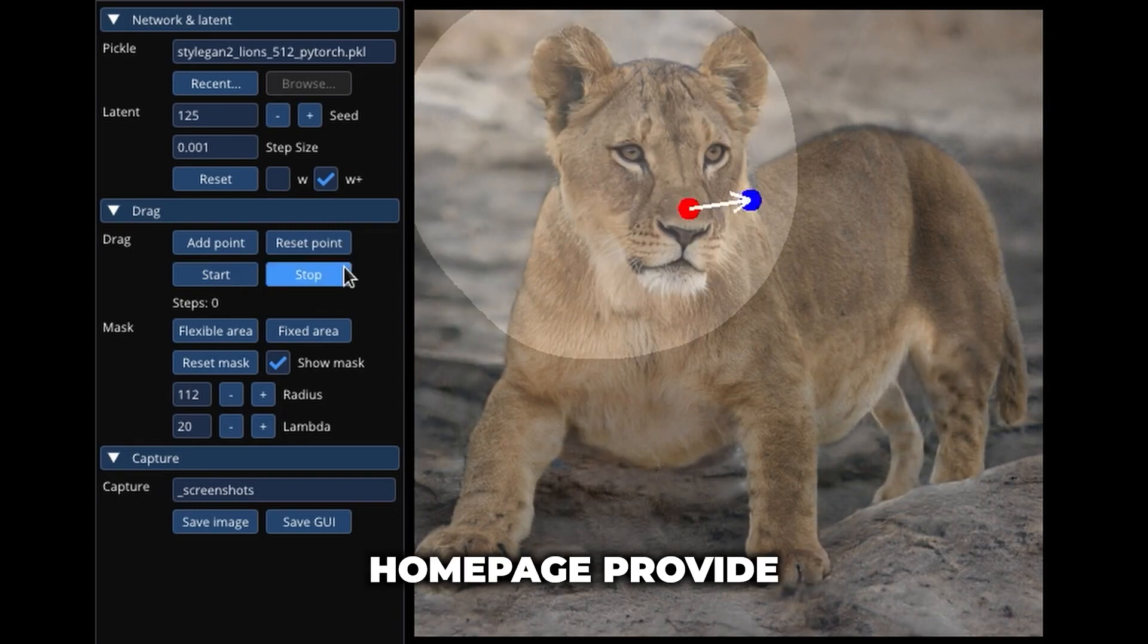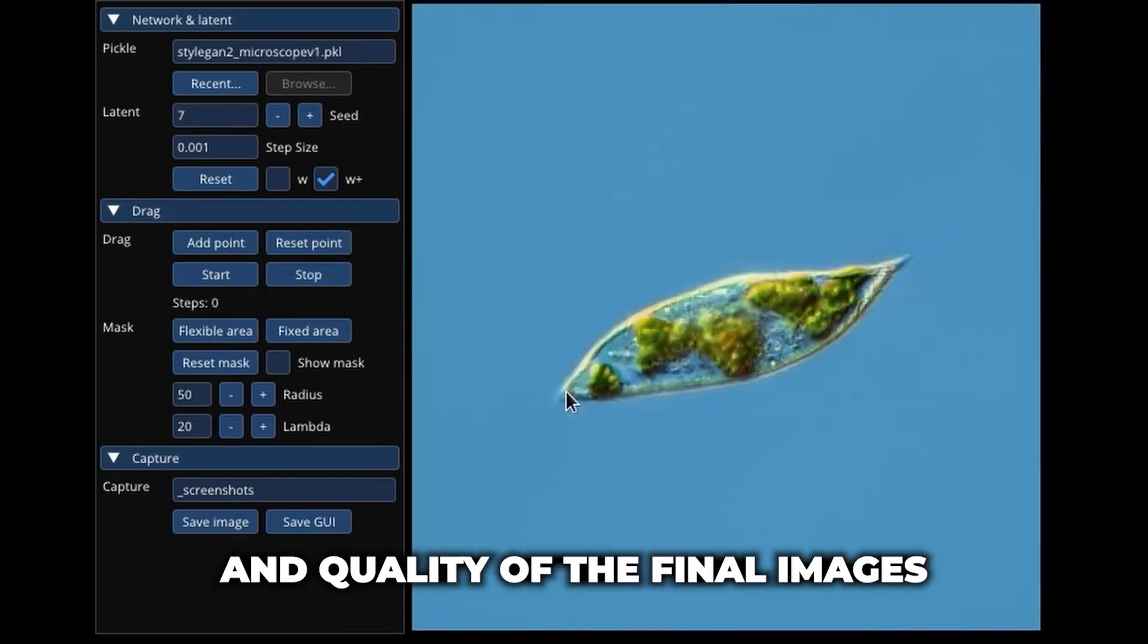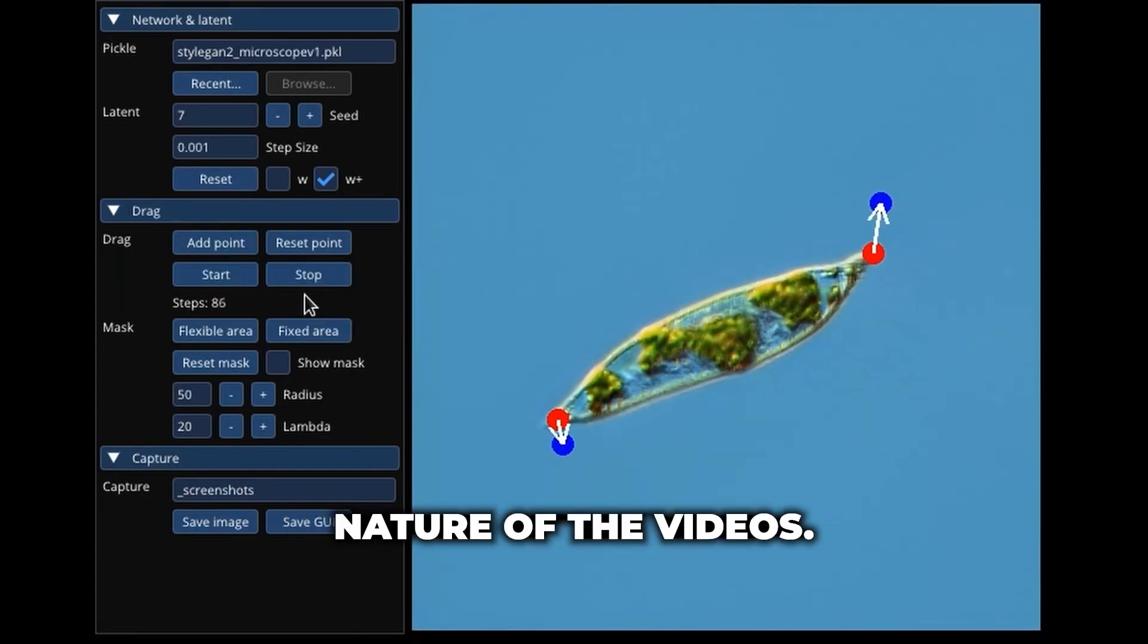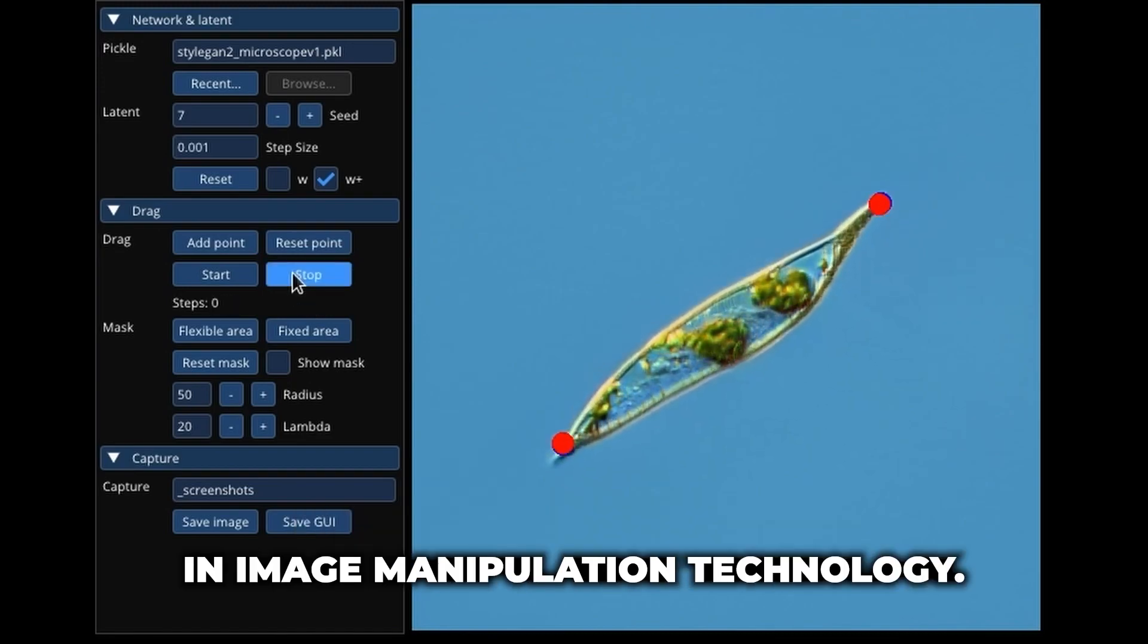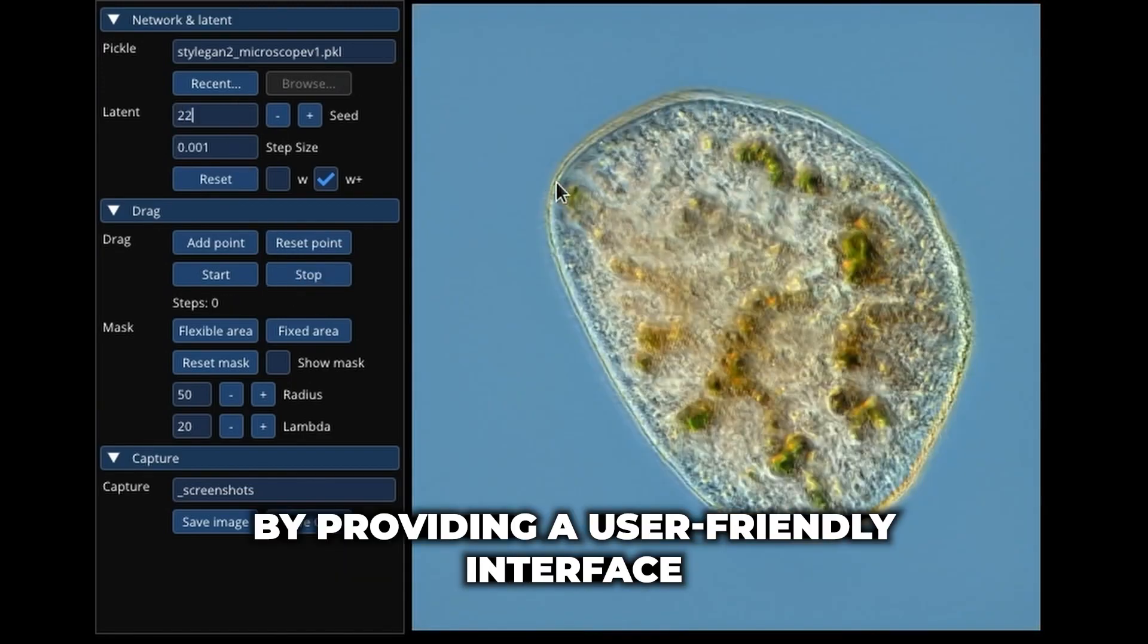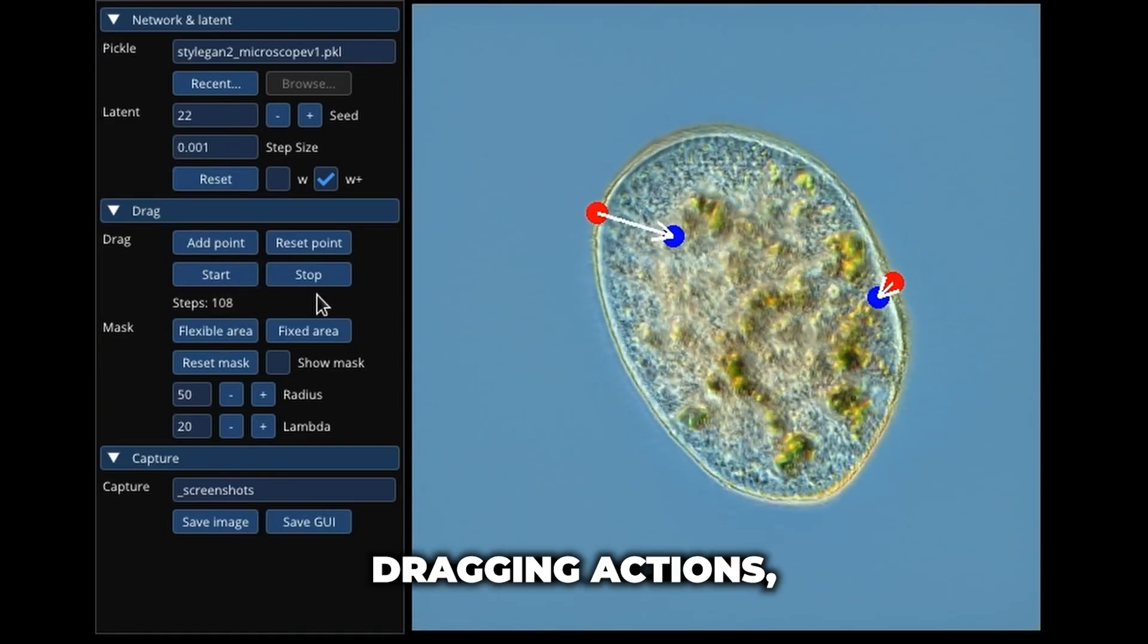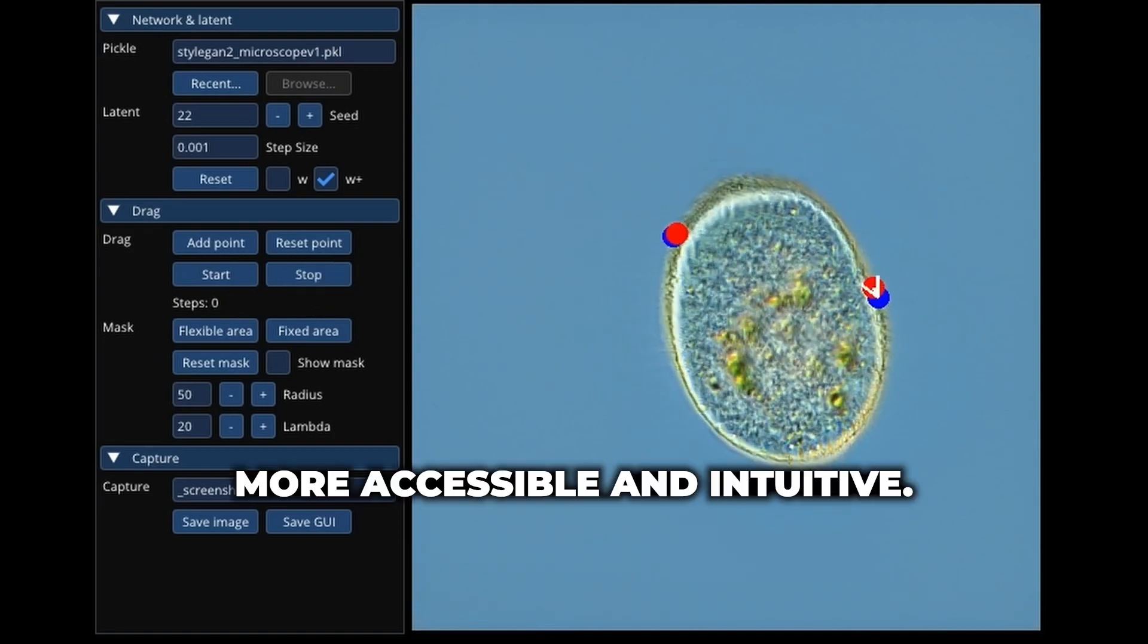The available videos on the research team's homepage provide a glimpse into the system's potential, but assessing the realism and quality of the final image is challenging due to the low-resolution nature of these videos. Nonetheless, Dragan represents a significant advancement in image manipulation technology by providing a user-friendly interface and empowering users to make precise modifications to images through simple dragging actions. It contributes to making image manipulation more accessible and intuitive.